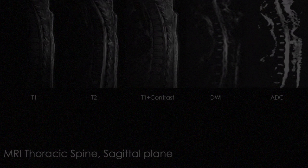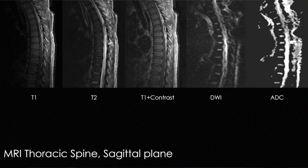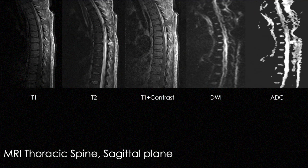This is an MRI of the thoracic spine in multiple sequences: a T1 without contrast, a T2 without contrast, and a T1-weighted with contrast. As you can see in the T1 without contrast, the lesion appears to be hyper-intense, possibly due to blood products within the lesion.